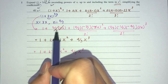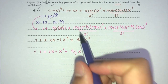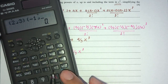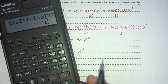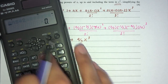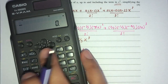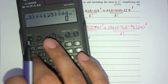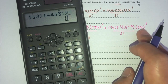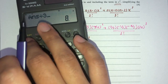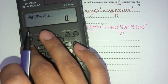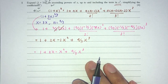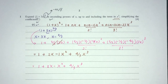Let's double-check our values. 1 is 1. (2/3)(3) is 2 — perfect. Then (2/3)(−1/3)(9)/2 = −1, giving −x². And (2/3)(−1/3)(−4/3)(27)/6 = 4/3, giving (4/3)x³. Confirmed — these are the correct terms for the binomial expansion.